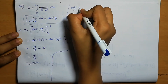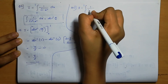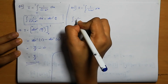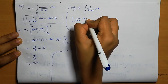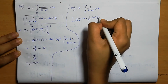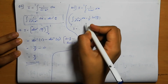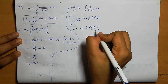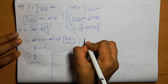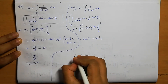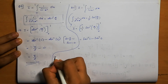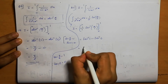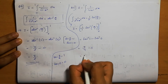Question number 10. I equals integral 0 to 1 of 1 by (1 plus x square) dx. This is in the form of integral 1 by (a square plus x square). The integral of 1 by (a square plus x square) is 1 by a tan inverse x by a. Here a equals 1, so it becomes 1 by 1 tan inverse x by 1, within the limit 0 to 1. Applying the limit: tan inverse 1 minus tan inverse 0. Tan pi by 4 is 1, so tan inverse 1 is pi by 4. Tan 0 is 0, so tan inverse 0 is 0. The answer is pi by 4.